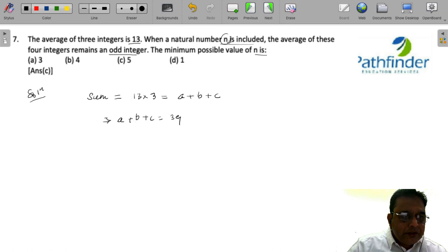Now, another natural number n is included. So, now we have 4 integers. And with 4 integers, you have the sum—sorry, the average of these 4 as an odd integer.